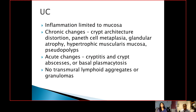The inflammation in ulcerative colitis, unlike Crohn's, is limited to the mucosa. You can see chronic changes with crypt architecture distortion, Paneth cell metaplasia, and glandular atrophy — meaning most of the glands would not be reaching the muscularis mucosa. You can have hypertrophic muscularis mucosa and pseudopolyps, where there would be glandular distortion with inflamed granulation tissue-rich stroma giving polypoid appearances. Acute changes include cryptitis, crypt abscesses, or basal plasmacytosis. There would not be transmural lymphoid aggregates or granulomas, unlike Crohn's.